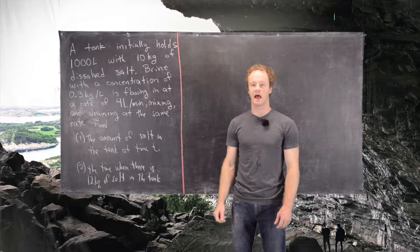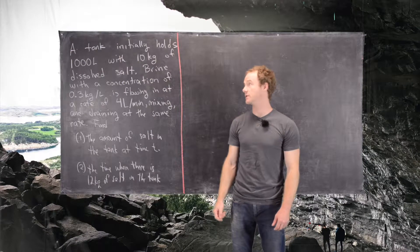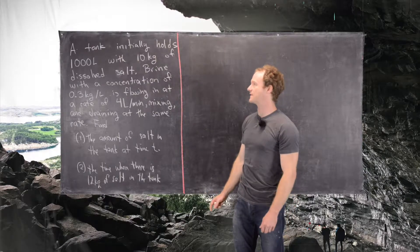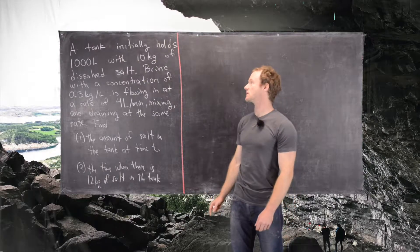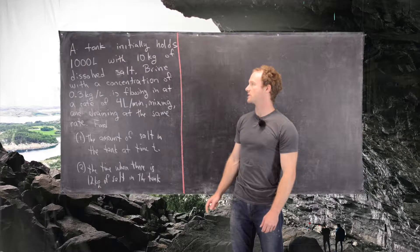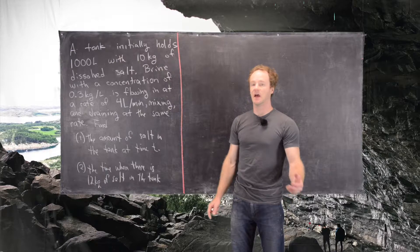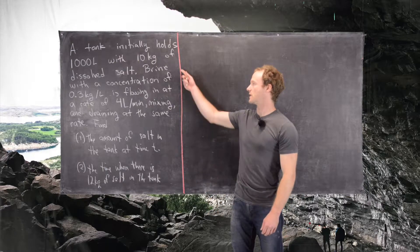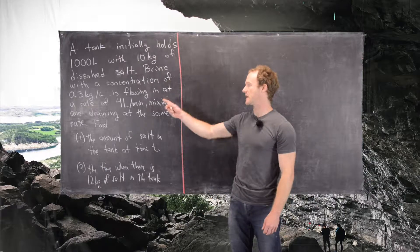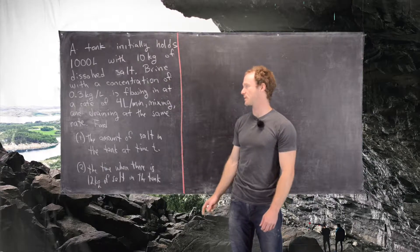In this video we're going to look at an application problem involving differential equations. We start with a tank that initially holds 1,000 liters of water with 10 kilograms of dissolved salt. A brine solution with a concentration of 0.3 kilograms per liter is flowing in at a rate of 4 liters per minute,